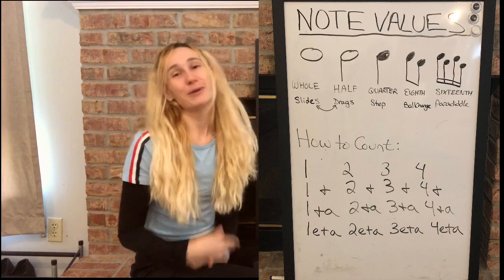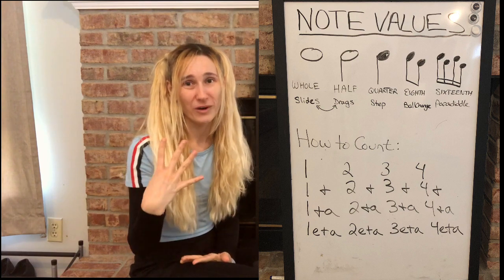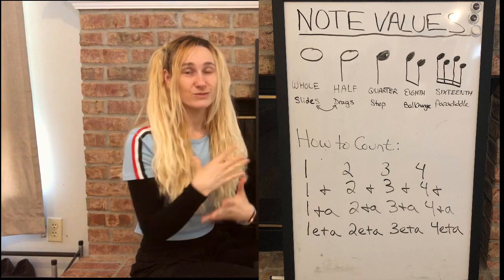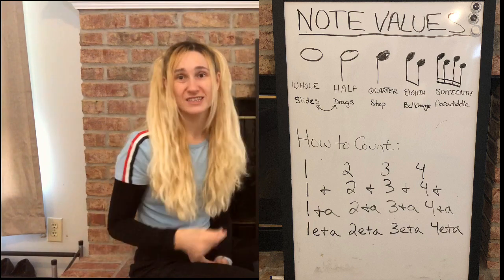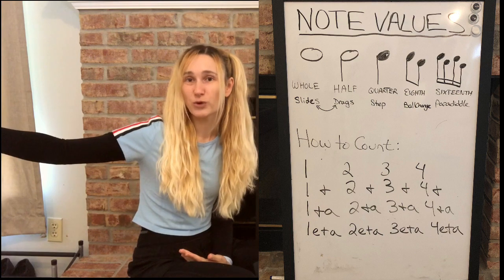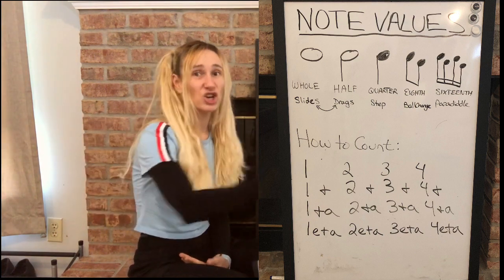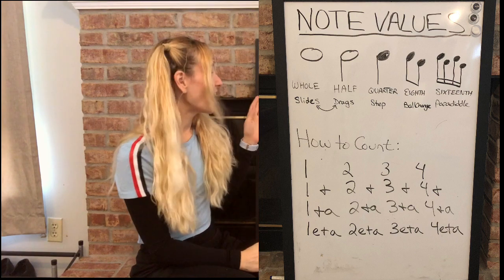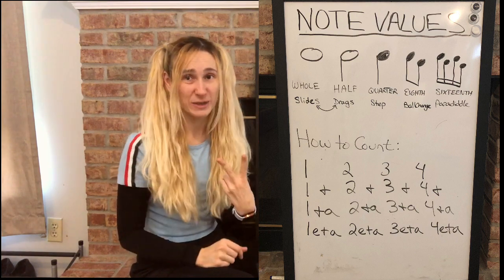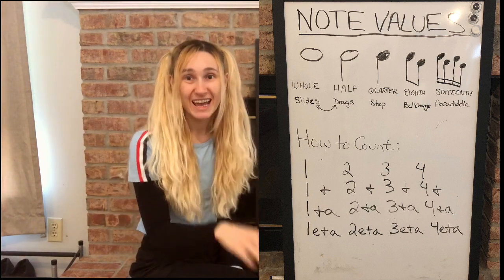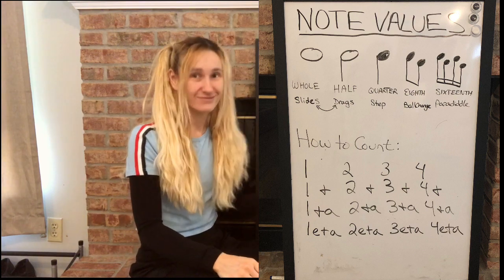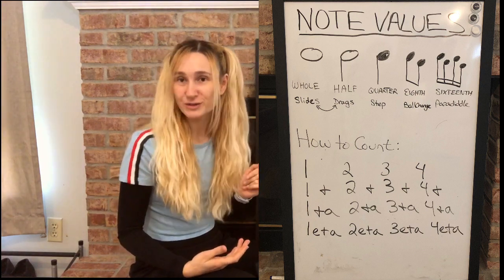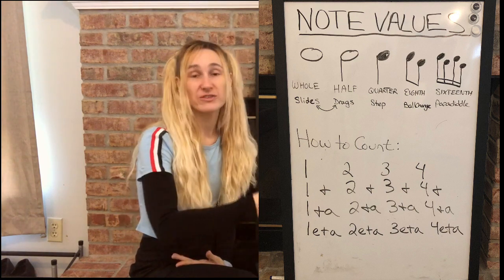That probably sounds weird — why is a whole note four and a quarter one? You have to see it in terms of a measure. In common time, four-four time, you have four beats per measure. A whole note is the whole measure long, which is why it has four beats. A half note is half the measure — two beats. A quarter note is a quarter of the measure — one beat. An eighth is an eighth of the measure — half a beat. A sixteenth is a sixteenth of the measure — a quarter of a beat.